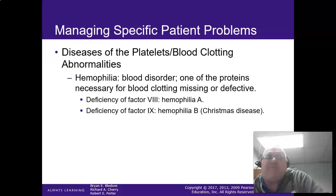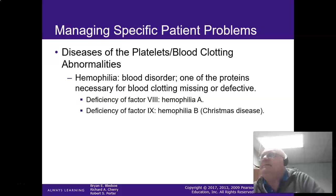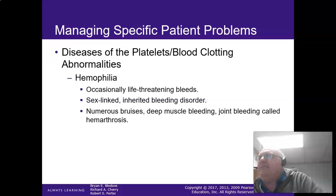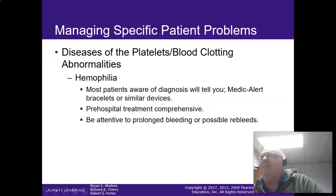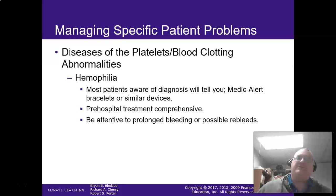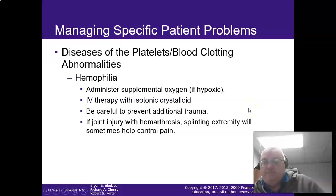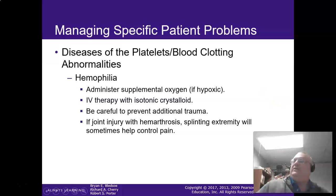Hemophiliacs: factor eight deficiency is hemophilia A, and factor nine deficiency is hemophilia B, also known as Christmas disease — hemophilia B is more rare. Remember: hemophiliacs just can't form blood clots — they can't form stable fibrin clots. They develop bruises, joint bleeding — when they move, they get blood in the joints. The biggest thing is to be attentive to the bleeding: maintain direct pressure and hold it for a very long time. Prevent any additional trauma. If the joint has blood in it — hemarthrosis — splinting the extremity can help with pain control.